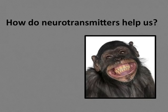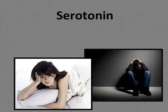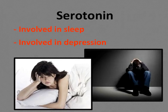Serotonin is a neurotransmitter whose pathways are involved with mood regulation, sleep, and mood. When people are depressed, they may not be getting enough serotonin. People who suffer from chronic depression are often given Prozac, a drug that works by keeping serotonin in the synapse longer, giving it more time to exert its effect.